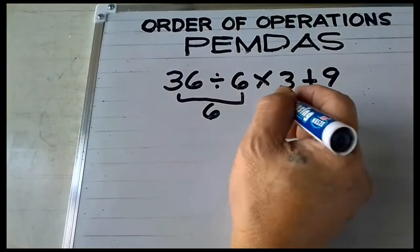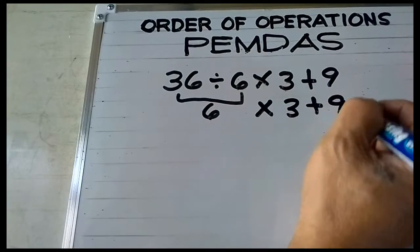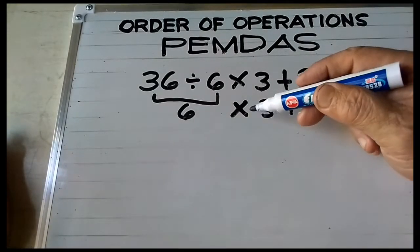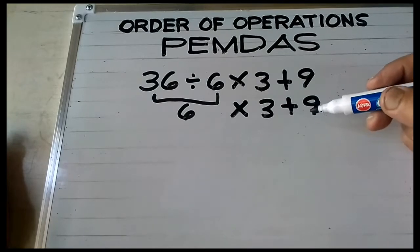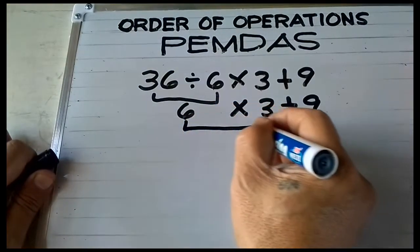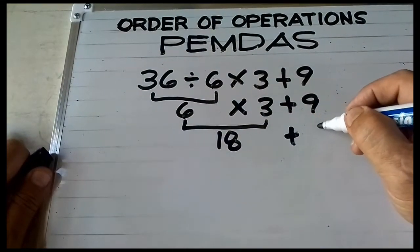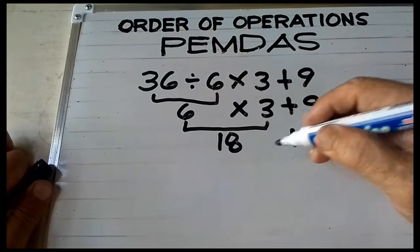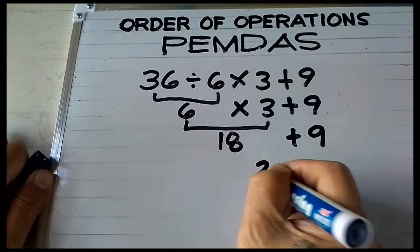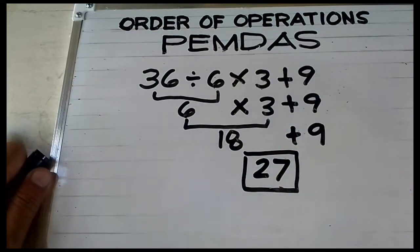Then write the multiplication: 6 times 3, plus 9. So 6 times 3 is equal to 18. Then bring down the addition and 9. So 18 plus 9 is equal to 27, and this is the final answer.